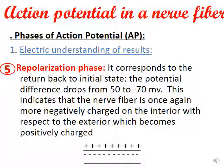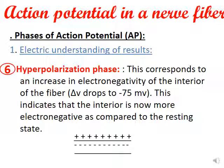Hyperpolarization — 'hyper' means increase — corresponds to an increase in the electronegativity of the interior of the nerve fiber, where delta V drops to less than minus 75 millivolts approximately. This means the interior is now more electronegative compared to the resting state, which is about minus 70 millivolts.